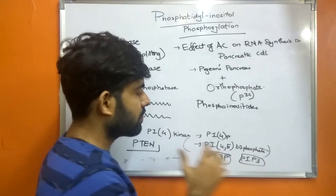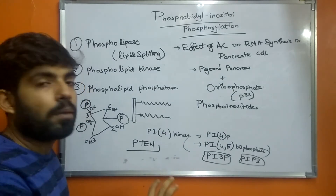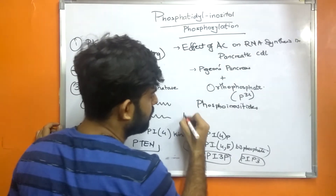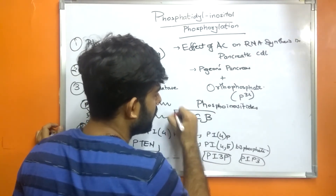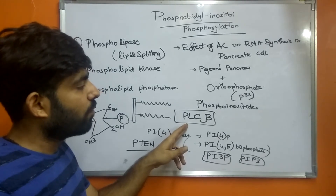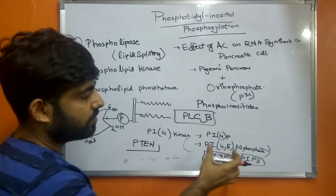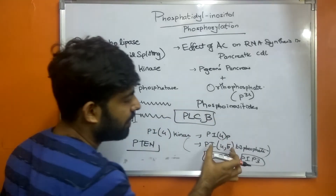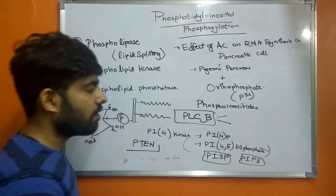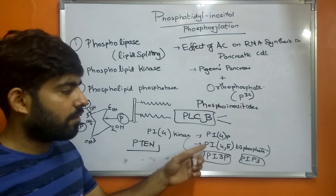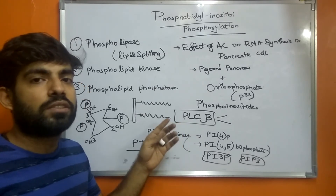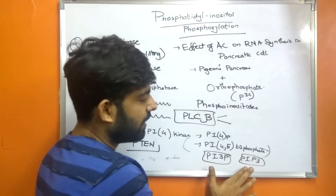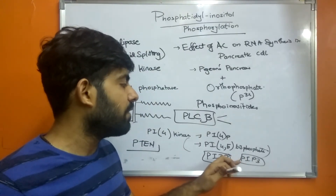These derivatives further bind to the PH domain of the effector molecule. The effector molecule is PLC-beta, which has a PH domain. These derivatives bind to the PH domain of PLC-beta and are further hydrolyzed. The binding of the derivatives to PLC-beta leads to hydrolysis of the derivative.